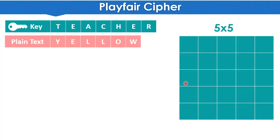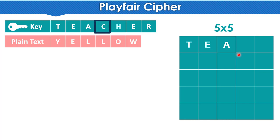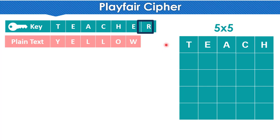We need to build a five by five table. Five by five means there are 25 blocks inside which we will write the alphabets. So for the key 'teacher': T comes first, then E, then A, then C, then H, then R. Note that once a letter is used it will not repeat — E is already written so next we write R, not E again. After the key letters, we continue with A, B, C from the alphabet. A is already written, so we start with B.